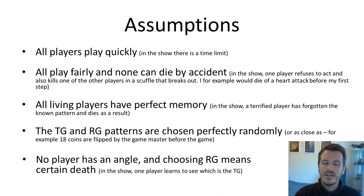So to do the math we're going to make a few assumptions. The first is that all the players play quickly. We're going to assume that everyone plays fairly and no one can die by accident. We're going to assume, and this is an important one, that all remaining players in the game have perfect memory of how much of the bridge has been solved so far. We're also going to assume that the tempered glass and the real glass patterns are chosen perfectly randomly. We're also assuming that no player has any special talent or ability over any other player. All are equally skilled.